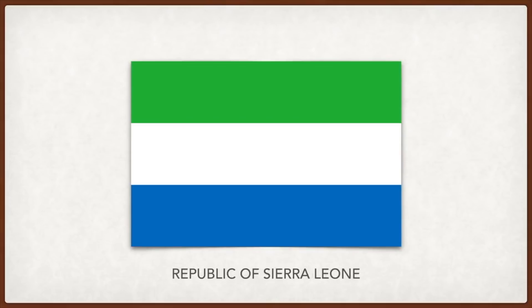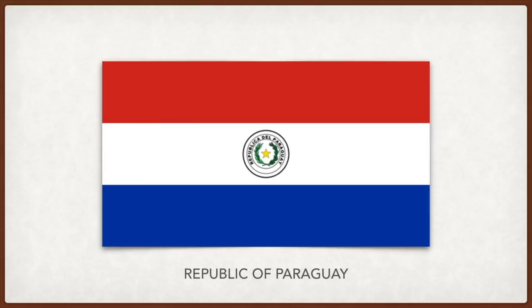Paraguay: the red, white, and blue were taken from the French flag because the dictator at the time, Rodríguez de Francia, admired Napoleon and the French Revolution. On the front in the center is the national coat of arms with the words 'Republic of Paraguay' in Spanish; on the back is the seal of the treasury, which features a lion sitting underneath a liberty cap on a staff with the national motto 'Peace and Justice.'